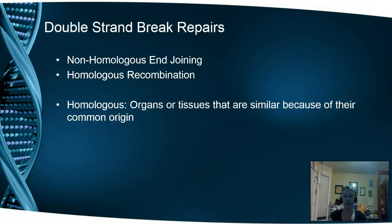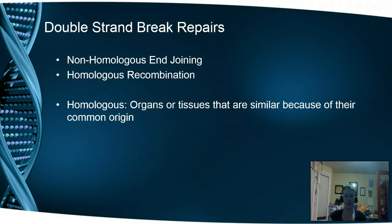The first thing we're going to talk about is double-stranded breaks. We talked about errors in single nucleotide sequences or changes like deamination, depurination, and things like that in the last topic. That's not the only way we can lose genetic information. We can also have a double helix break where both strands of the double helix are broken. That's where we have two different repair options: non-homologous end joining and homologous recombination.